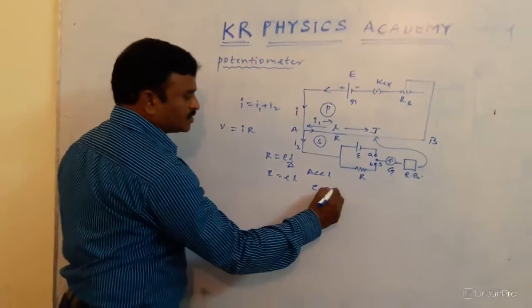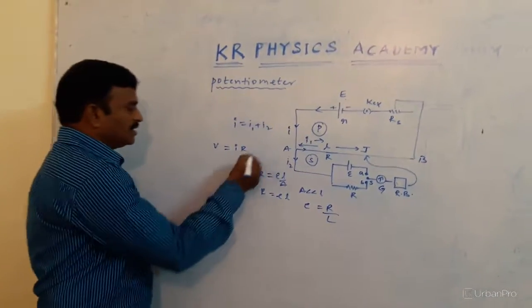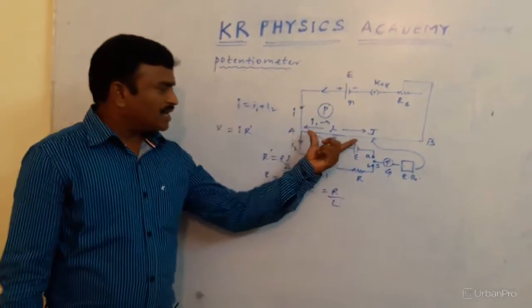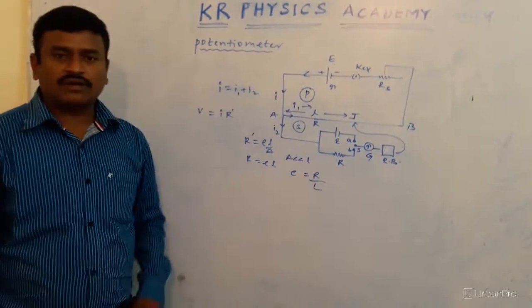Where ρ is called as specific resistance, total resistance per total length. Here, let us take as R dash, a particular length resistance. Total resistance is capital R.